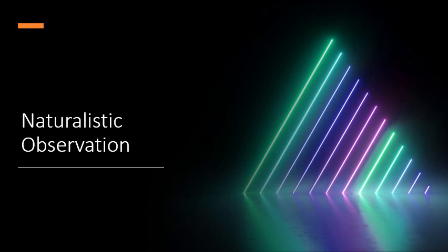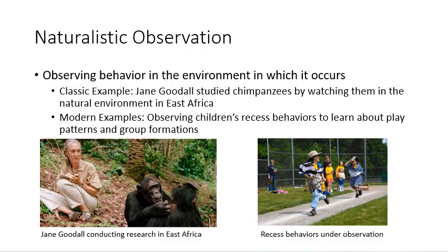First, naturalistic observation. In this type of study, we are simply observing behavior in the environment in which it occurs. For example, Jane Goodall studied chimpanzees by watching them in the natural environment in East Africa. Another example is observing children's recess behaviors to learn about play patterns and group formations — a study you looked at early in this unit.